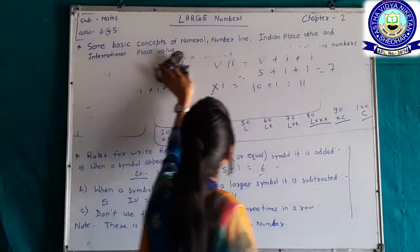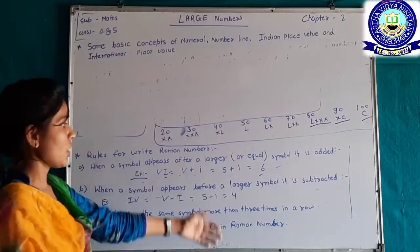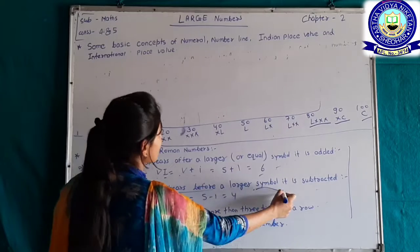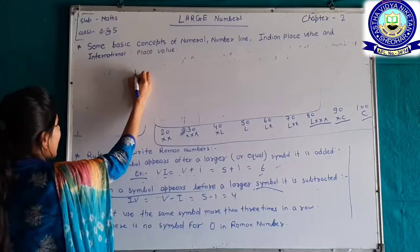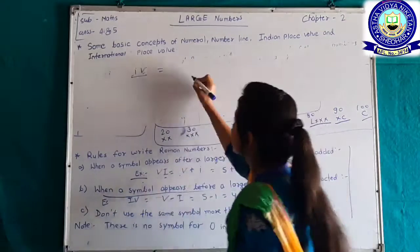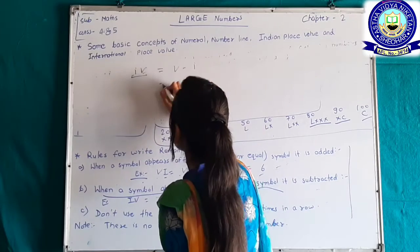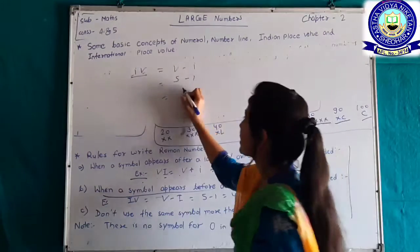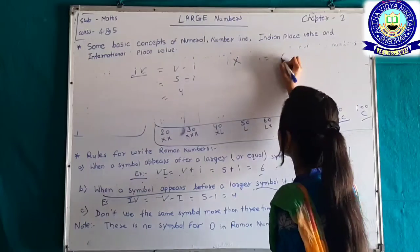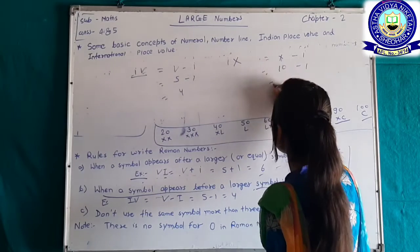Another rule: when a symbol appears before a larger symbol, it is subtracted. For example, IV means V minus I equals 5 minus 1 equals 4. And IX means X minus I equals 10 minus 1 equals 9.